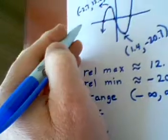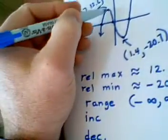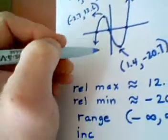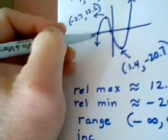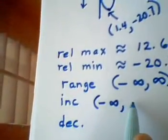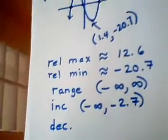As I scan from negative infinity on the x-axis to the x value of negative 2.7, I see that this portion of the graph is increasing. So from negative infinity to negative 2.7, I have an increasing section.